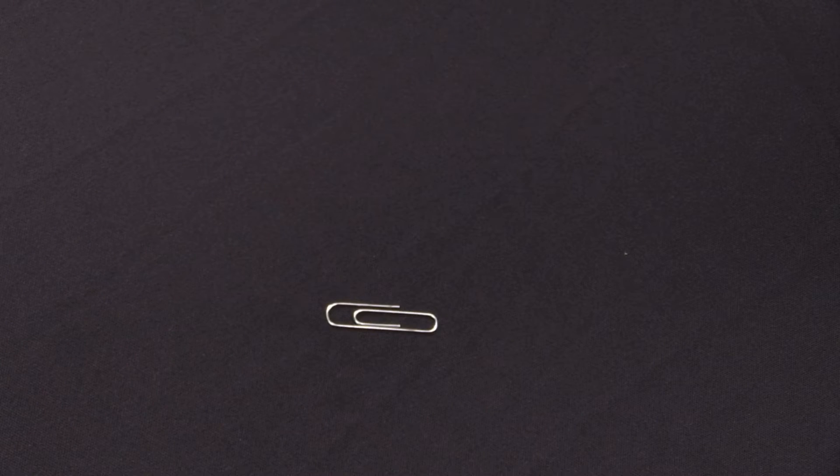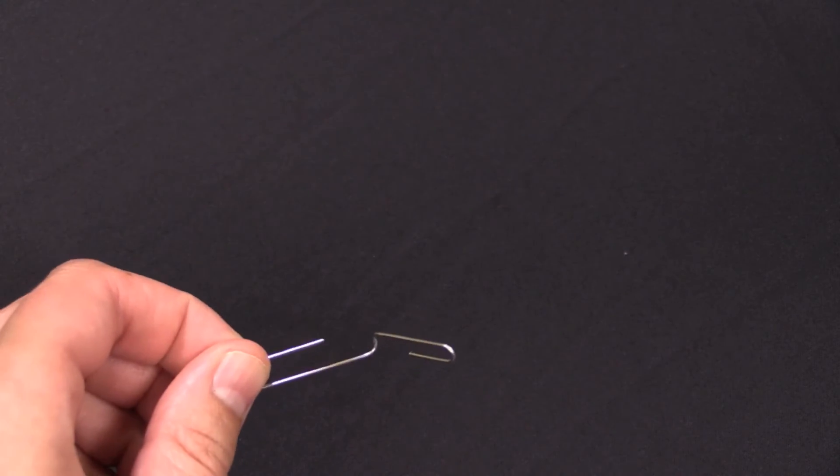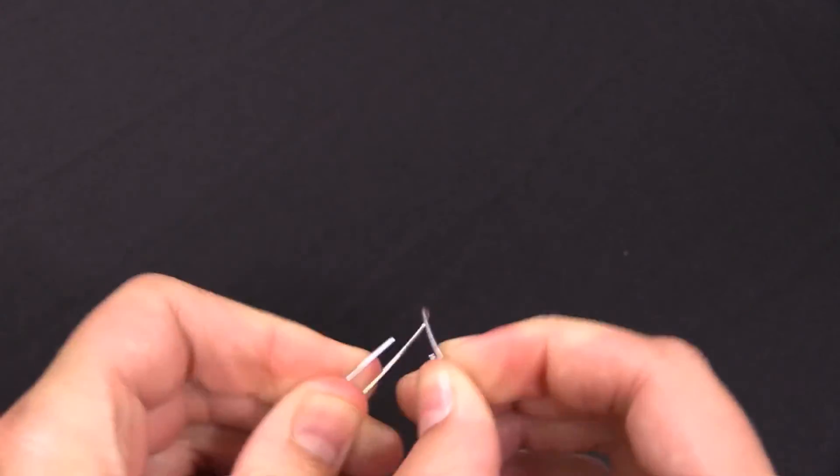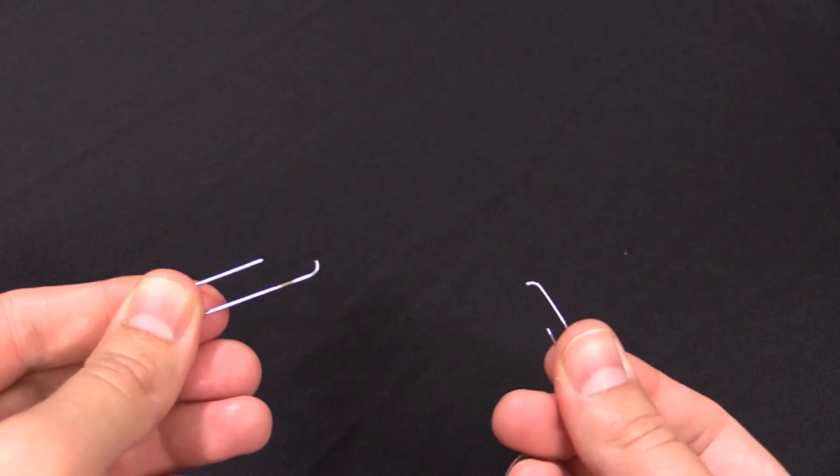Secondly, vibrations can cause objects to break. Objects can break when part of the object is moved back and forth over and over again. For example, let's look at this paper clip. If we bend the paper clip once, it won't break. But if we bend the paper clip over and over again, eventually it does break.